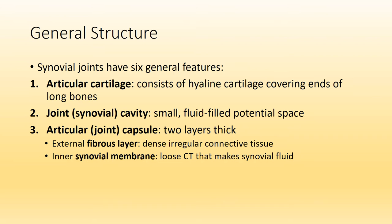Starting with the six general features — the first is that synovial joints will contain articular cartilage. Articular cartilage is an example of hyaline cartilage. We name it articular rather than hyaline because we find it at the ends of long bones where we have joints or articulations. Next, as previously mentioned, synovial joints will have a synovial cavity. In this cavity we find synovial fluid to reduce friction, because these joints are freely movable.